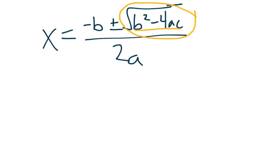Because that's a really crucial part to the quadratic formula. So the discriminant of a quadratic equation is b squared minus 4ac.